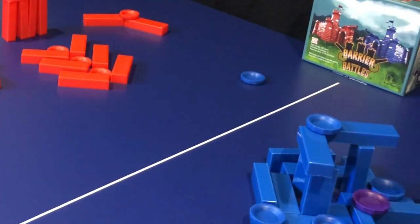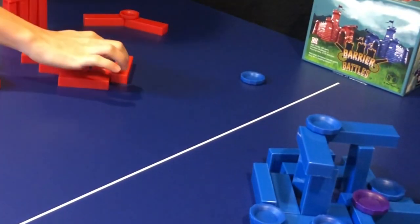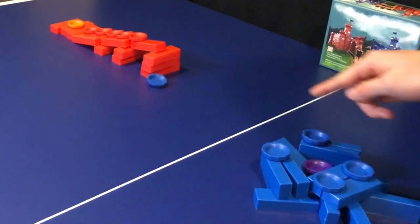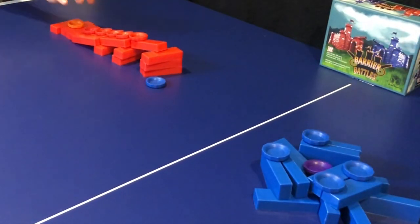Then, starting with the player who finished building first, the two players will take turns flicking their disc pieces or their king piece. When a piece is flicked, it keeps its new position.